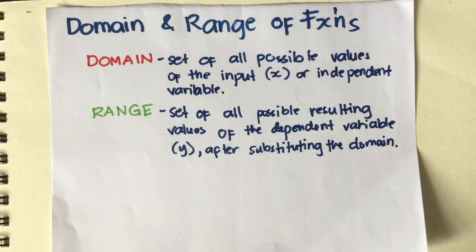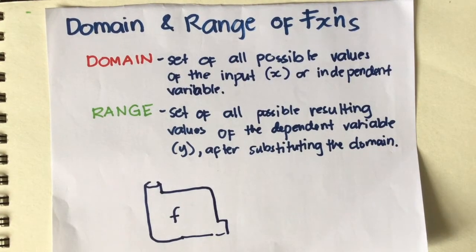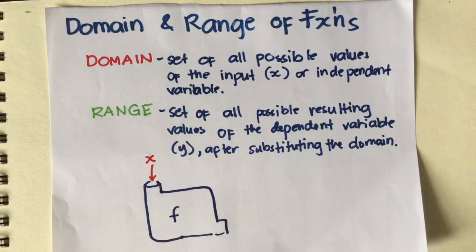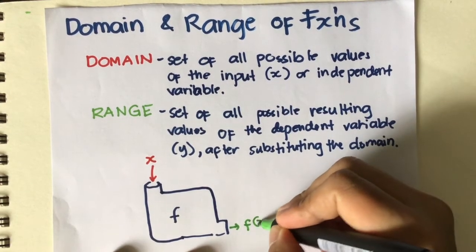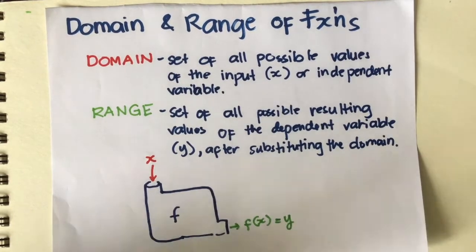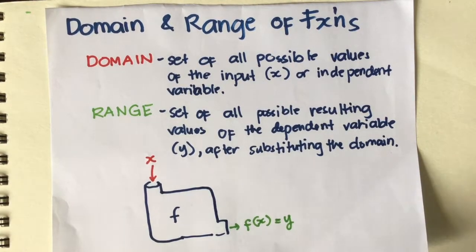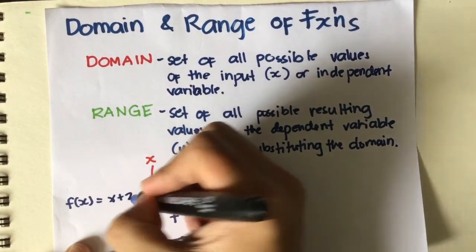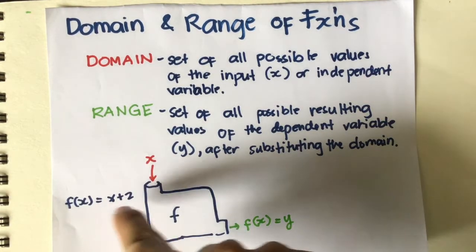Let's take for example this function machine. In this function machine f, if our input is x, the output will be the range — that will be f of x. In math, f of x is equal to y or the range. For example, we're given the function f of x is equal to x plus 2.